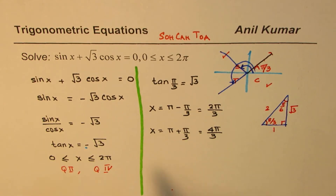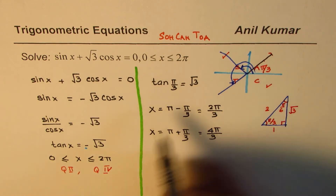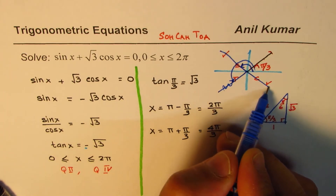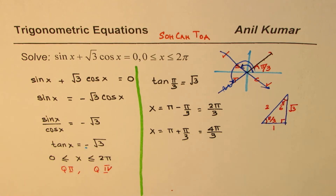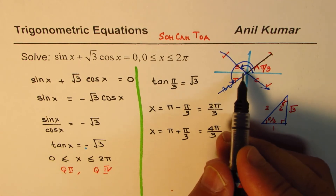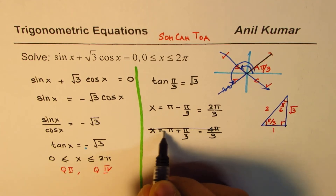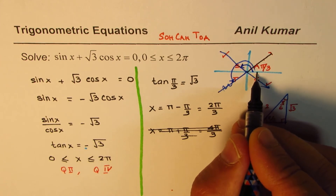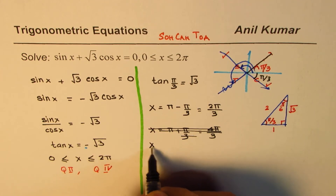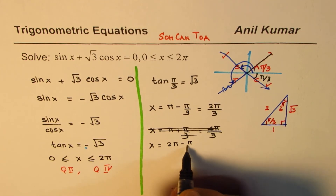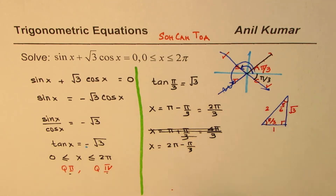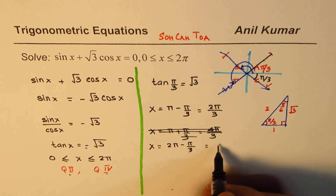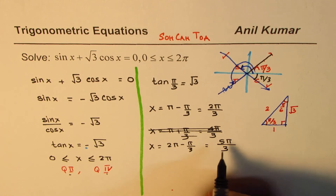Wait — I need to correct that. Negative tan means quadrant 2 and quadrant 4, not quadrant 3. So the quadrant 3 solution is incorrect. The quadrant 4 solution is x equals 2 pi minus pi by 3, not pi plus pi by 3. That gives us 6 minus 1, which is 5 pi by 3. So the two correct solutions are 2 pi by 3 and 5 pi by 3.